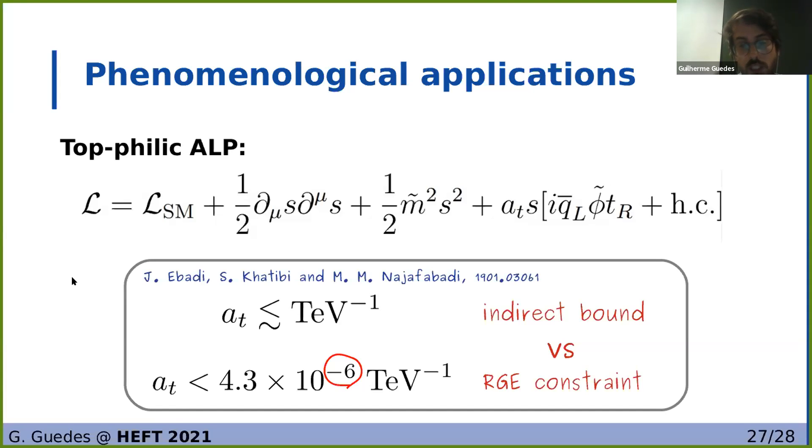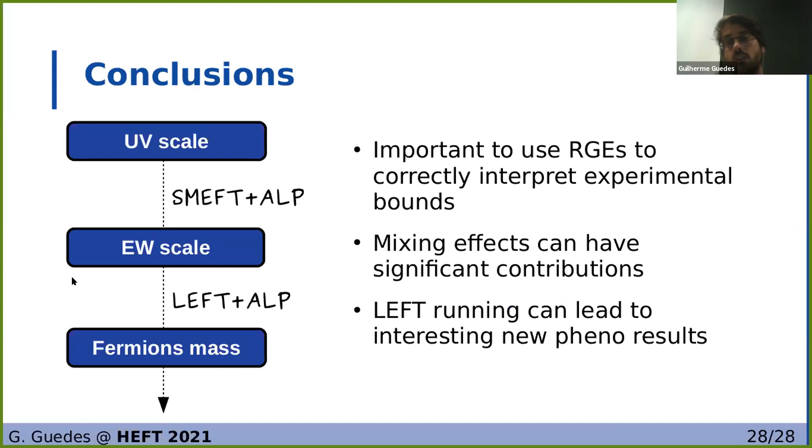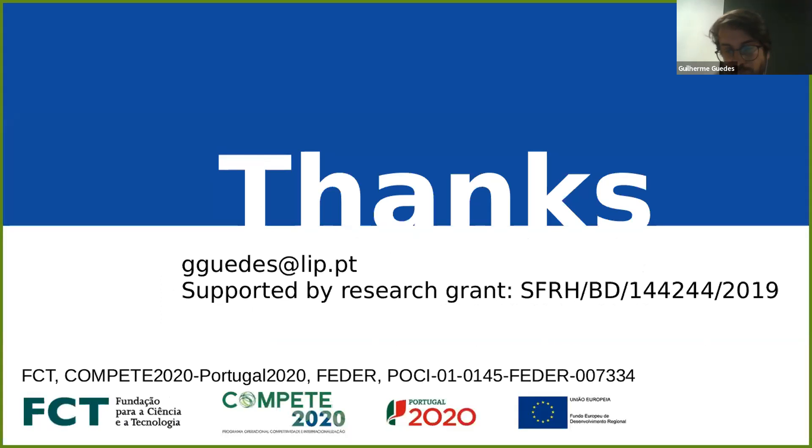So in conclusion, given this wide difference in energy scales at which the experimental bounds are taken to constrain our theories, it's important to consider the renormalization group equations to correctly interpret these bounds in terms of a specific UV completion. Namely the mixing effects can allow us to probe specific couplings which would otherwise be very difficult to constrain. Then given that some experiments take place at very low energies, the running in the LEFT can also be important, but it will always be dependent on which sort of matching we get at the electroweak scale. Thank you.